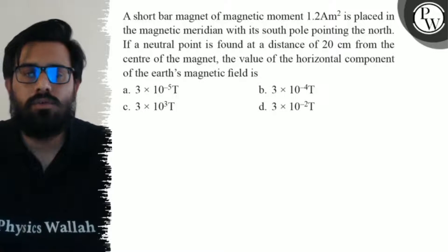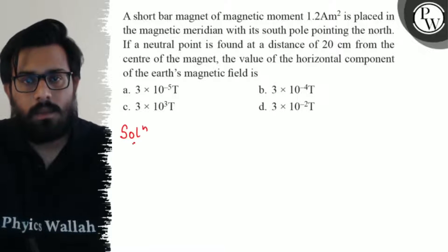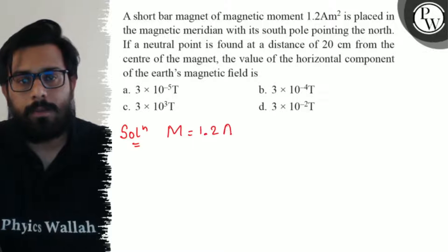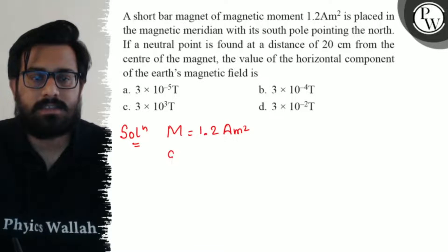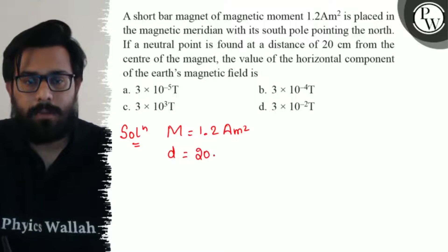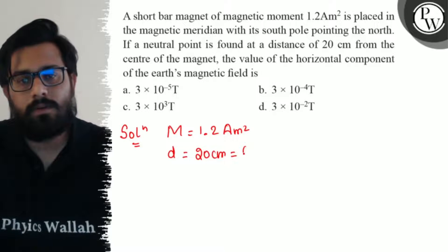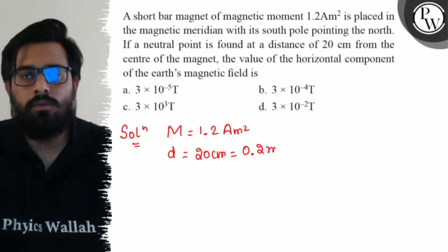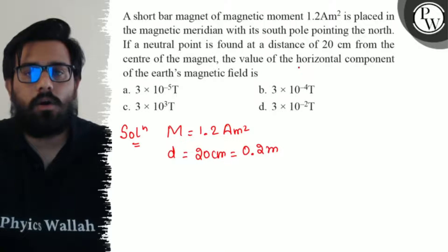So here in this question we have the value of magnetic moment as 1.2 ampere meter squared. We have the value of distance d as 20 centimeters, and 20 centimeters to convert to meters, it comes to be 0.2 meters. And we have to calculate the horizontal component of the earth's magnetic field.